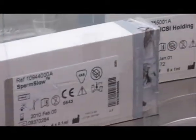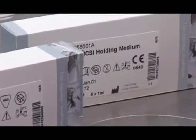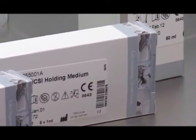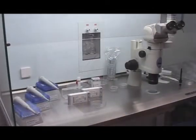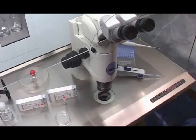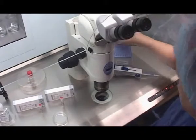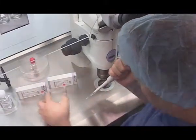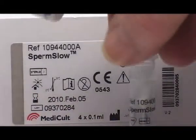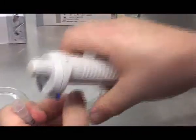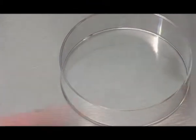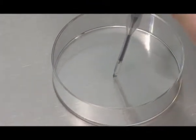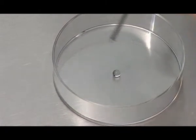Place the pre-cleaned packages of SpermSlow, holding medium and liquid paraffin oil on the heated surface of the workbench. Pipette two 10 microlitre drops of SpermSlow onto the bottom of the dish, which should be kept at 37 degrees centigrade during the entire procedure.